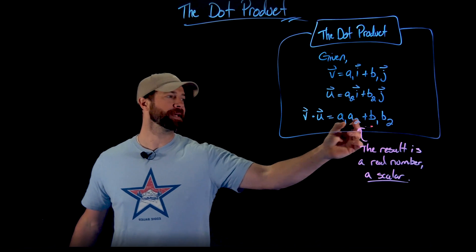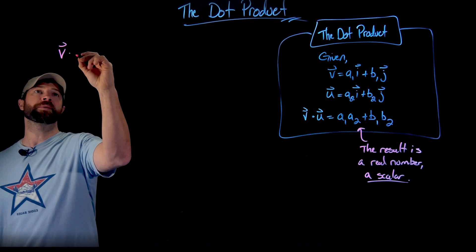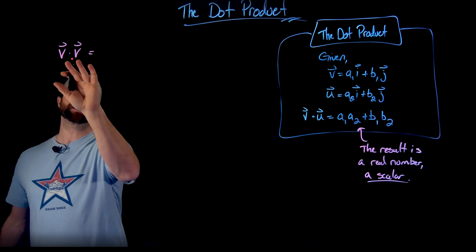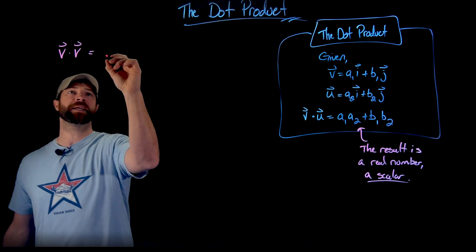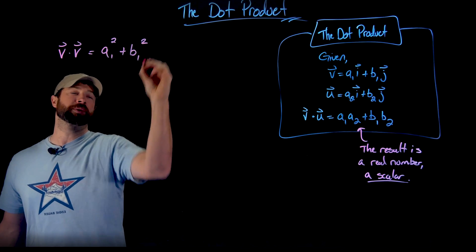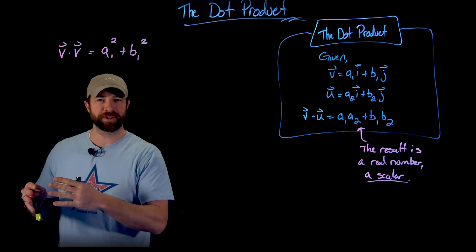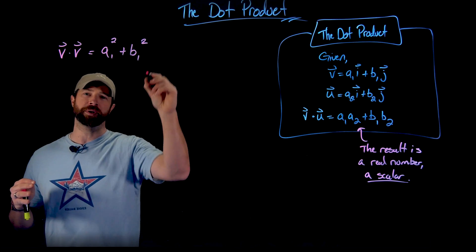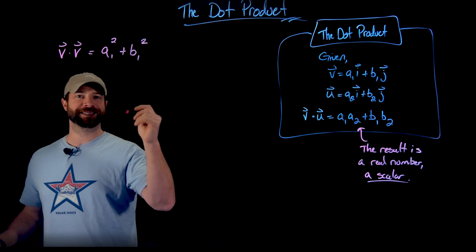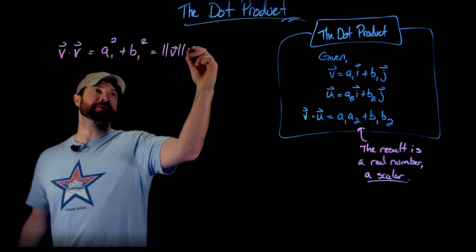Importantly here, given this form, if we took a vector and we created the dot product with itself, which we're completely allowed to do, what we would get would be a₁² plus b₁². And if we look at this, this is very similar to when we find the magnitude of a vector, except we would have a square root. So actually, if we take a vector and find the dot product with itself, what we find is the magnitude of that vector squared.